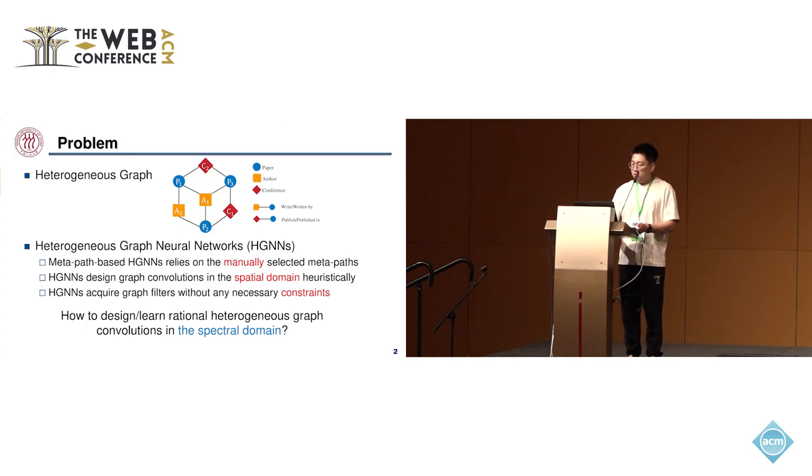This work focuses on heterogeneous graphs which have multiple types of nodes and edges. These graphs are widespread in our life. An example is an academic network that includes three types of nodes: paper, author, and conference, and four types of edges: written by, published, and published in.